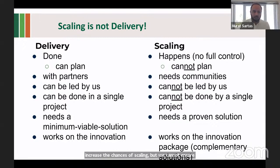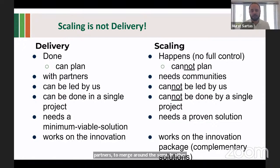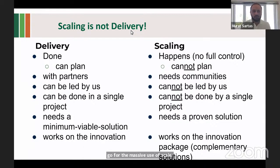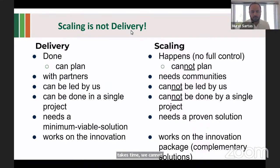Secondly, delivery happens with partners, but scaling happens with communities. We cannot have only a single set of partners and achieve scaling. We need to engage with more partners, and those partners need to converge around the same vision. Research and innovation actors are there to produce innovations and do early delivery, but they never reach the numbers or investment capacity to go for massive scale. Therefore, we always need other organizations, and because it takes time, we cannot ensure scaling with a single project. We need multiple coherent projects — a portfolio — to move on with scaling.